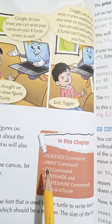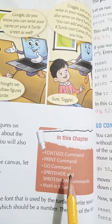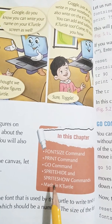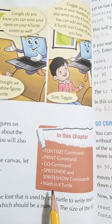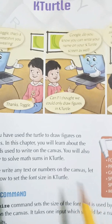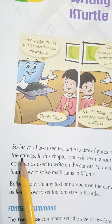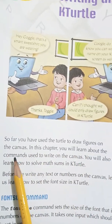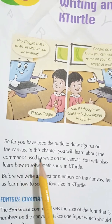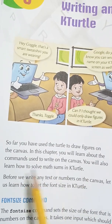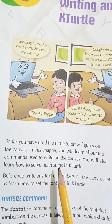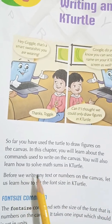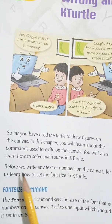In this chapter, what we are going to learn: font size command, print command, go command, sprite hide and sprite show commands, and math in K-Turtle. So far you have used the turtle to draw figures on the canvas. In this chapter you will learn about the commands used to write on the canvas, and how to solve math sums in K-Turtle.